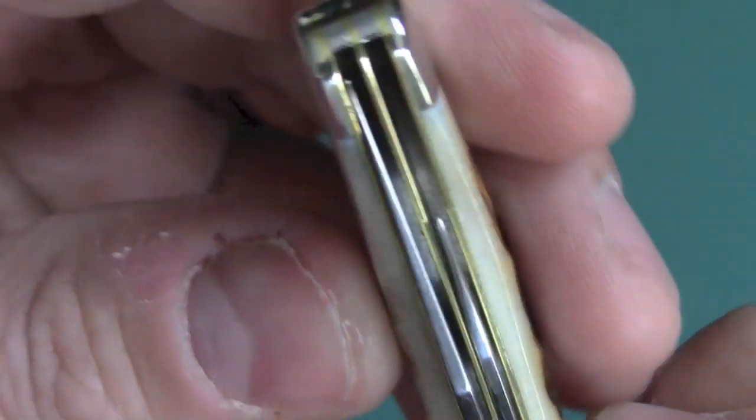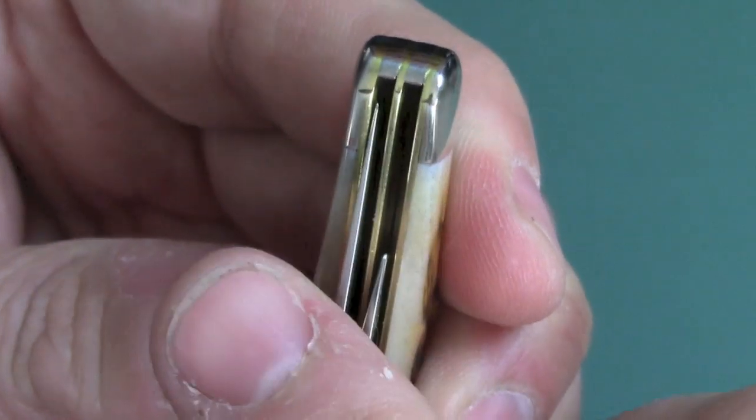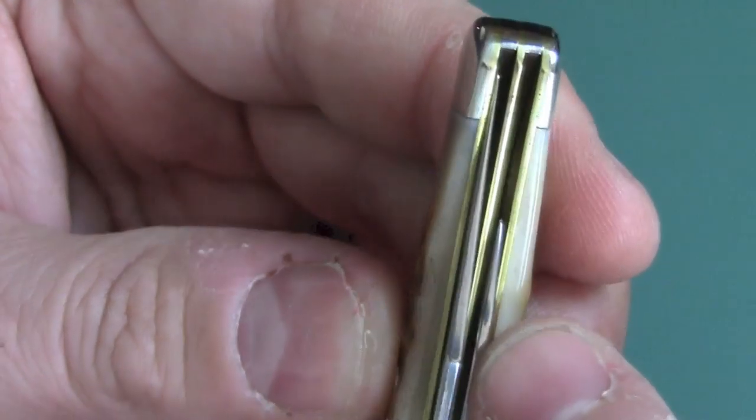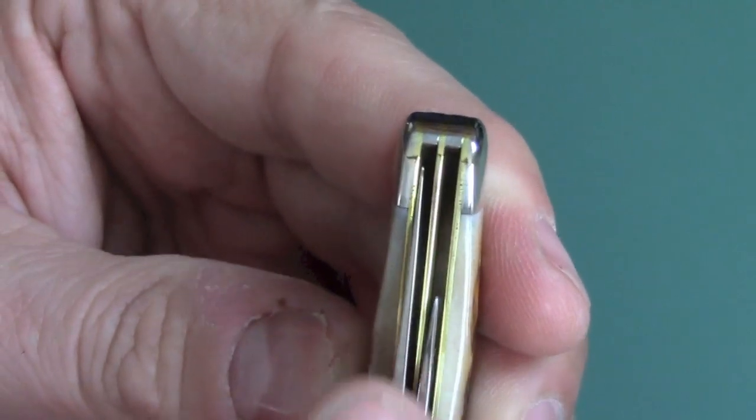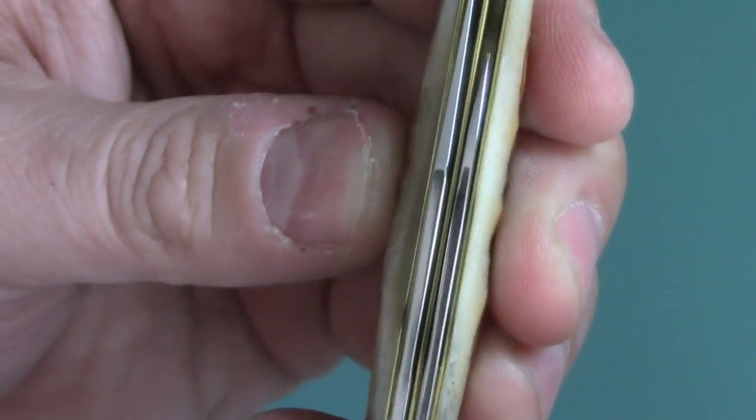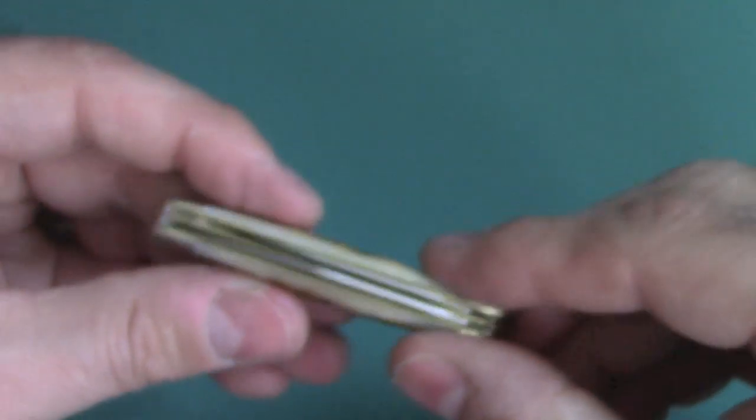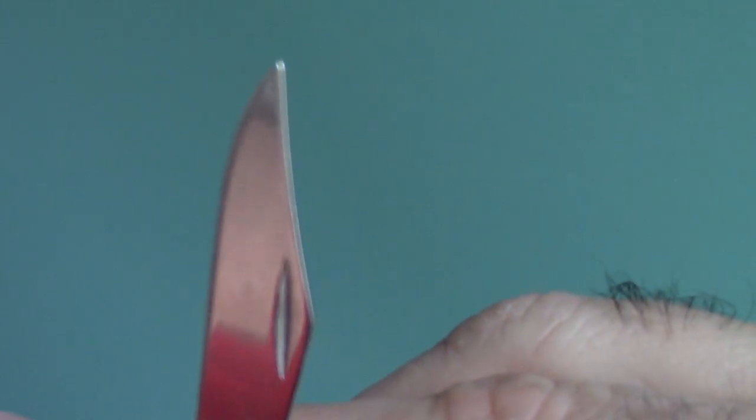How about centering? Are things centered really good? Well, you can see that this blade right here is sort of off to the left. But the pen blade looks centered really nice. The main blade right here, which is the clip point, is not centered. But I don't see any scratches on the blade because of it.